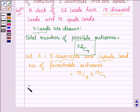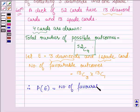Therefore, probability of the event E, that is probability of obtaining 3 diamonds and 1 spade card, is equal to the number of favorable outcomes upon the total number of possible outcomes.